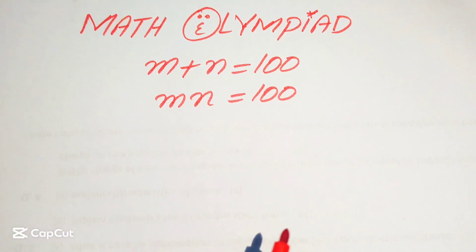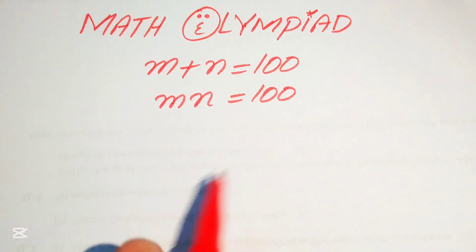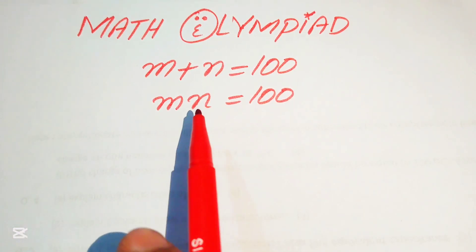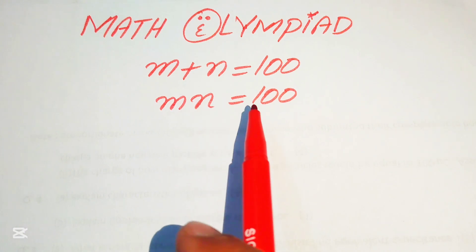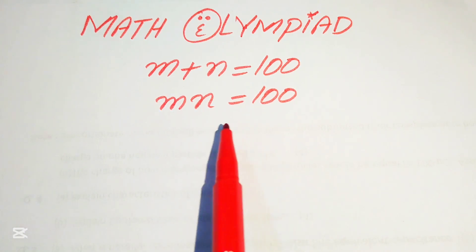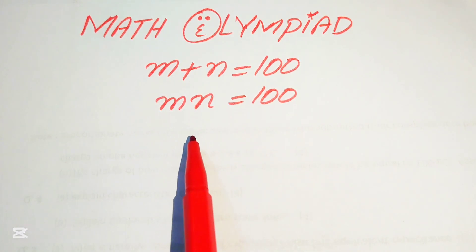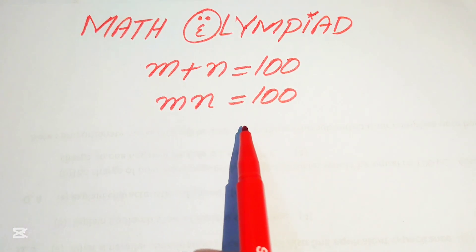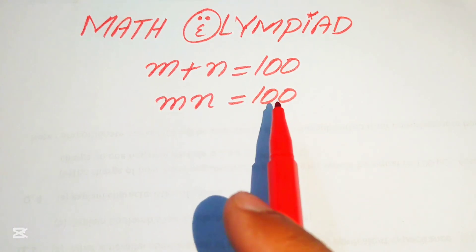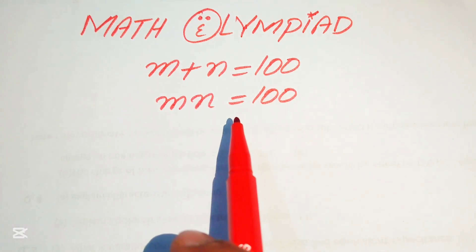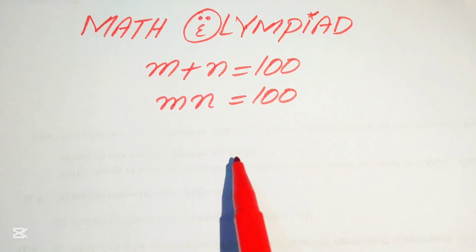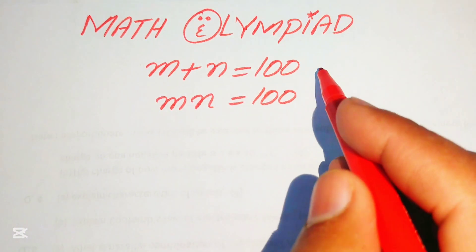Hello everyone, welcome to solve this nice math algebra problem. So here we have m plus n equals to 100 and m times n equals to also 100. We need to solve this problem for the values of m and n.